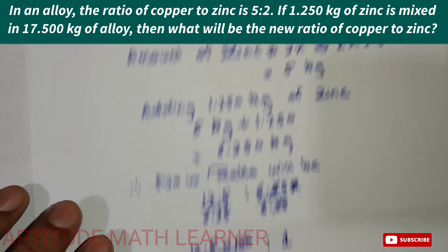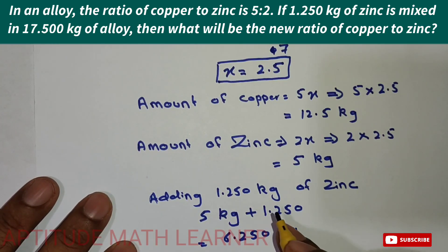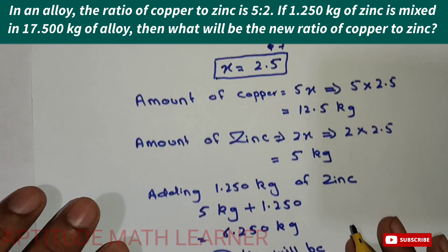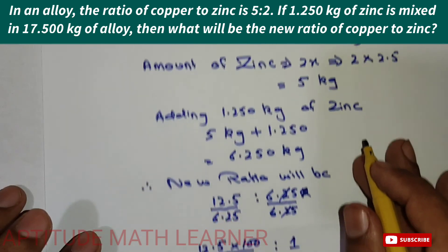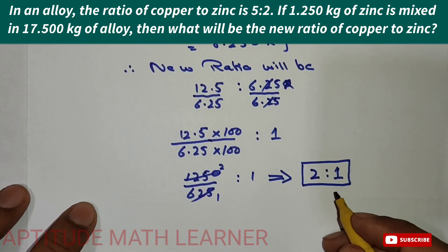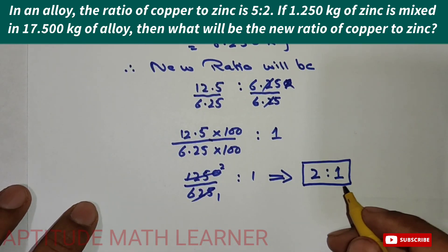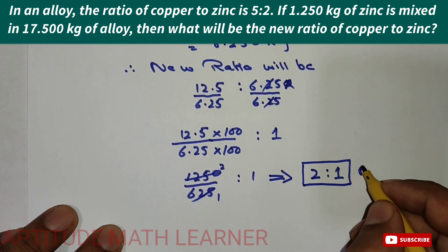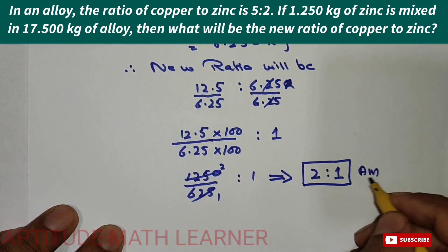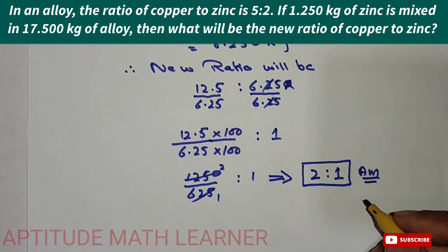After adding 1.250 kg of zinc, the new ratio of copper to zinc is 2:1. This is our answer. I hope you have completely understood the question. Thank you very much.